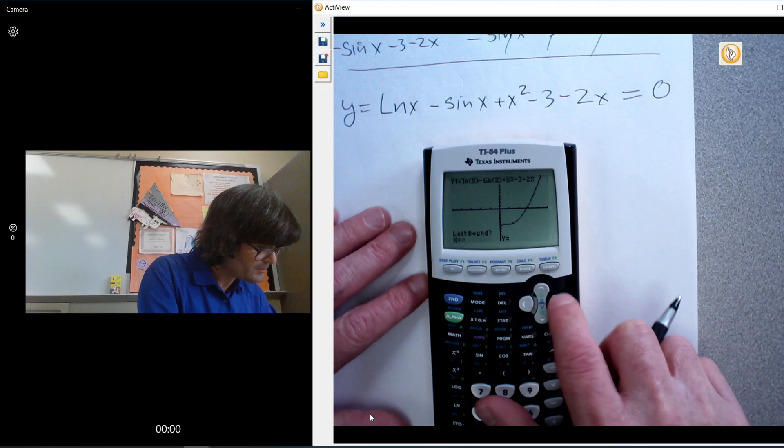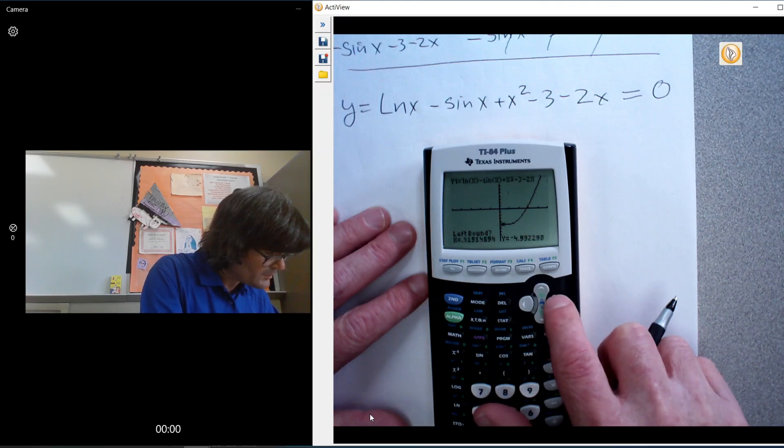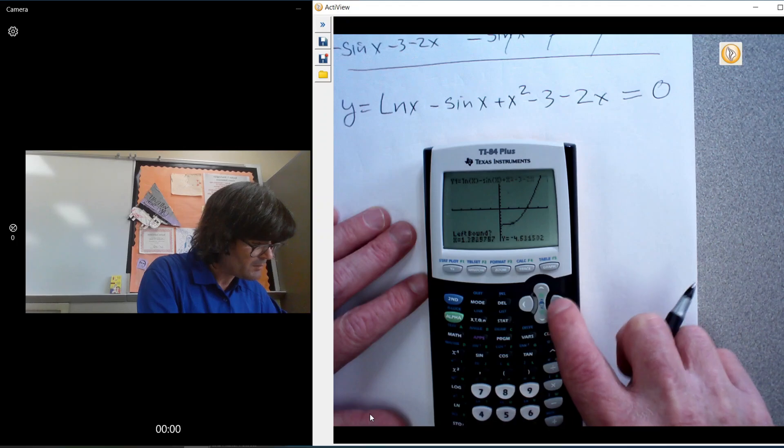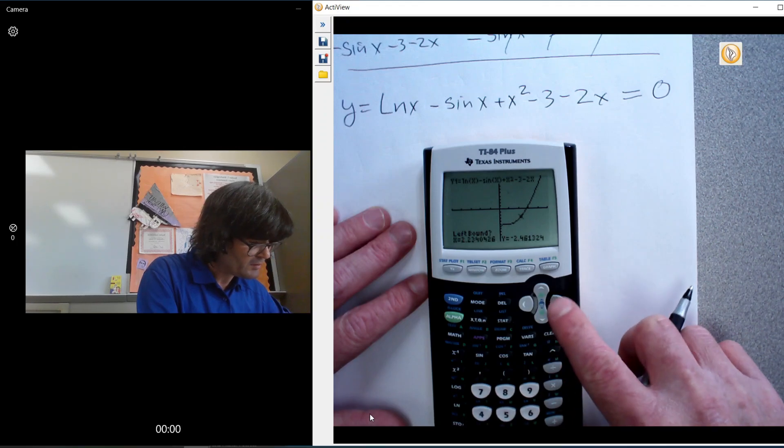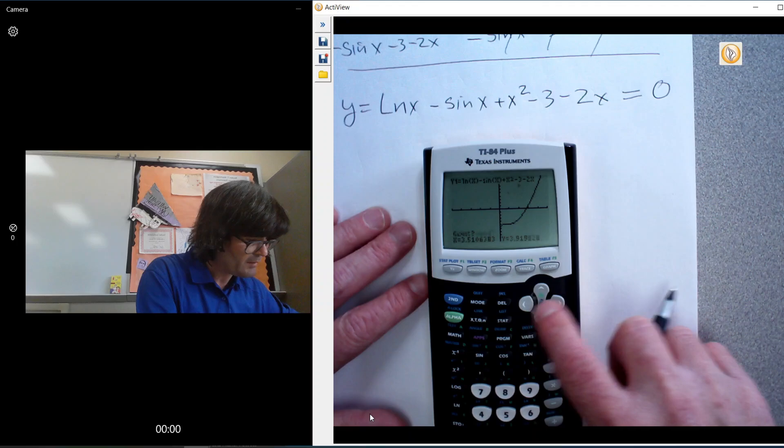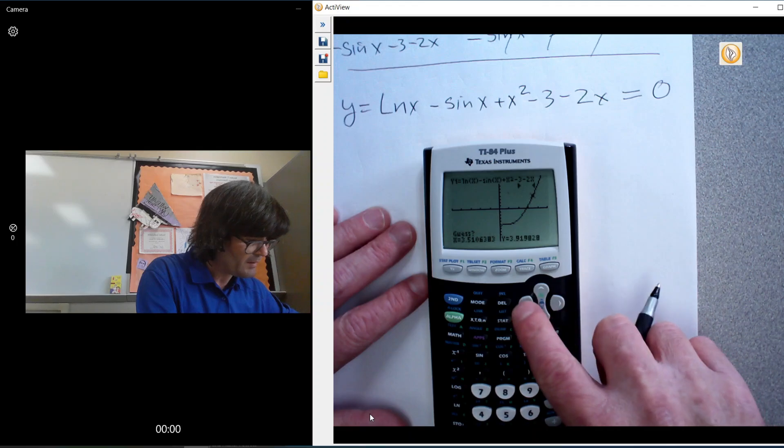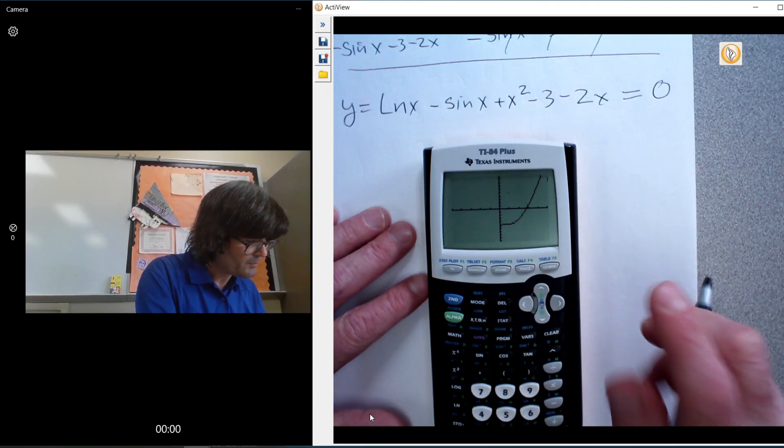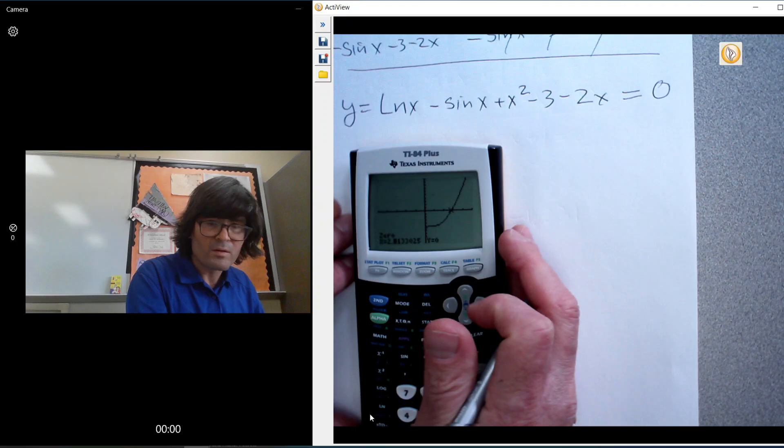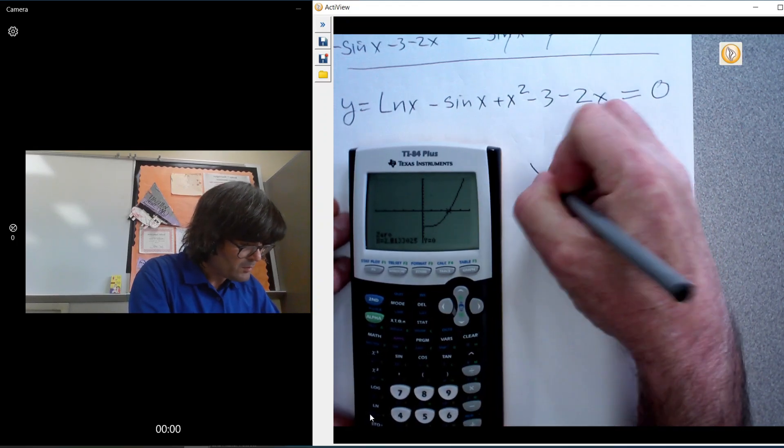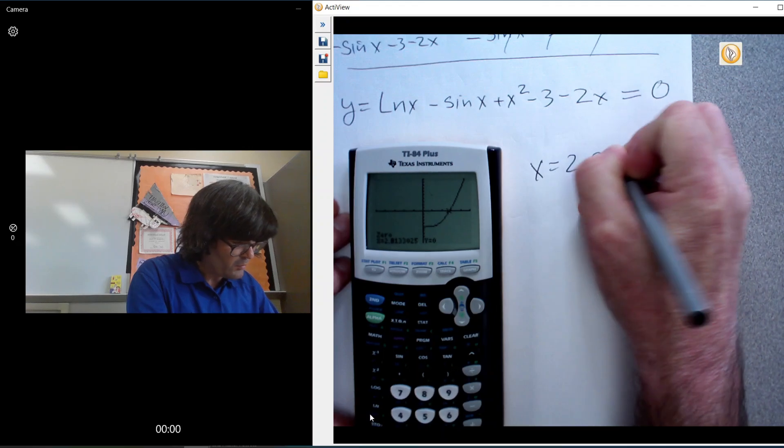We go to second calc, zero. Here's my cursor. Left looks good there. Right bound can be there. And then I'm going to guess. So we'll call that 2.813.